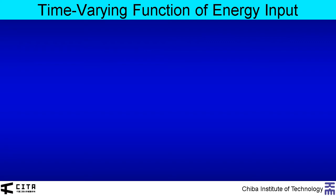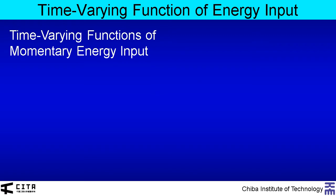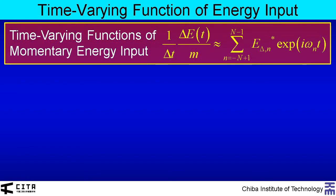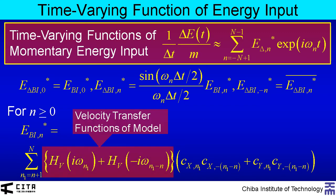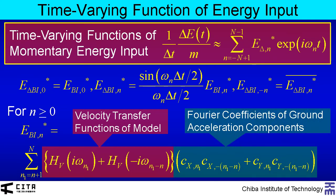Next, I would like to explain the time-varying function of energy input. Following the previous study about unidirectional excitation, the time-varying function of momentary input energy is expressed in the form of Fourier series. Here are the coefficients of the time-varying function. This part consists of a velocity transfer function of the model, which can be calculated based on the structural properties. And this part consists of Fourier coefficients of ground motion components.